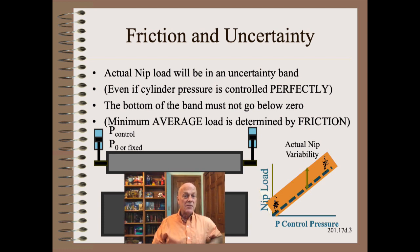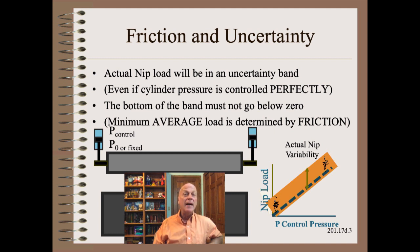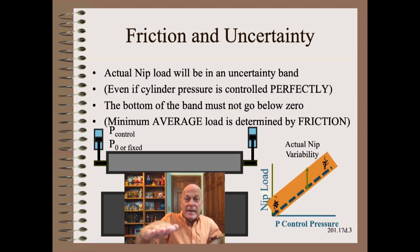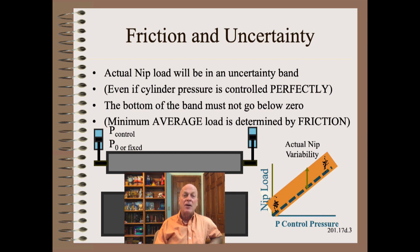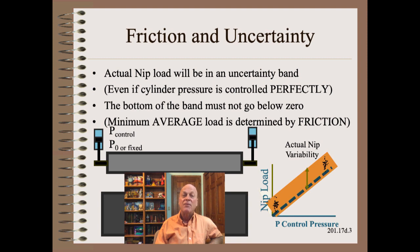The results will be that actual nip loads — not the ones you see on the control panel — will lie in an uncertainty band instead of on a line or at a set point. This is true even if the cylinder pressure is controlled perfectly. We can see here how we must adjust the calibration of zero such that bouncing nips never go to or below zero. That also means that low average nip loads are not possible with systems bound up with friction.